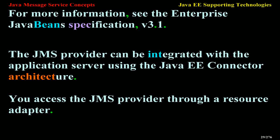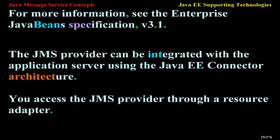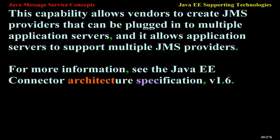You access the JMS provider through a resource adapter. This capability allows vendors to create JMS providers that can be plugged in to multiple application servers, and it allows application servers to support multiple JMS providers. For more information, see the Java EE Connector Architecture specification, v1.6.